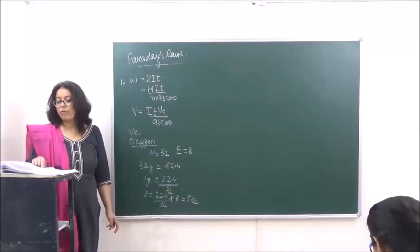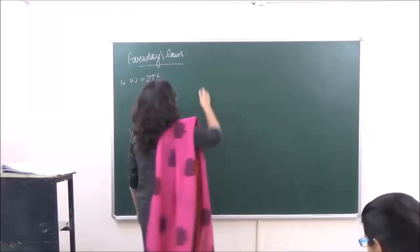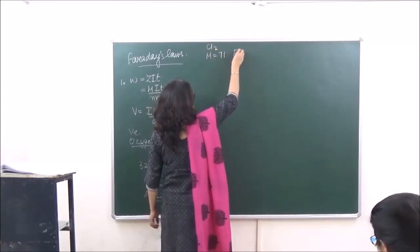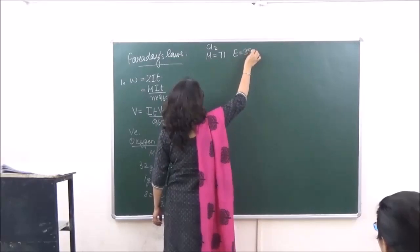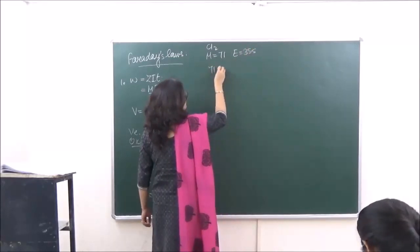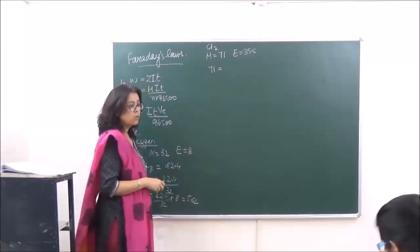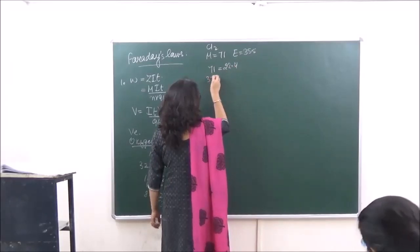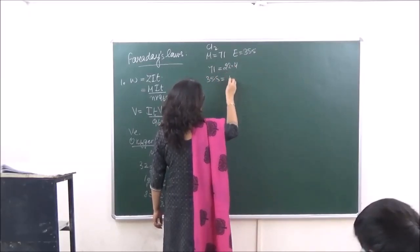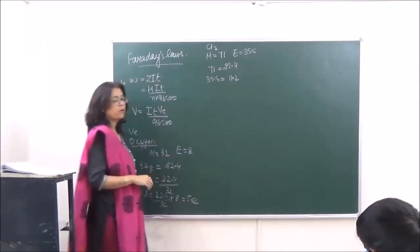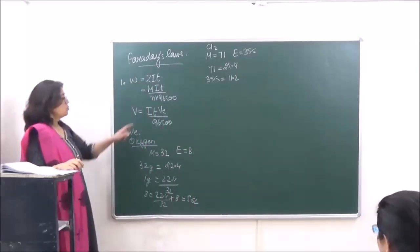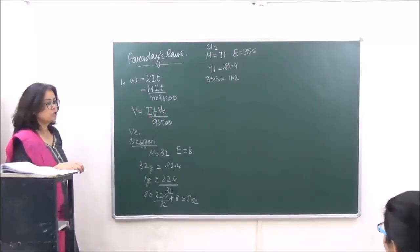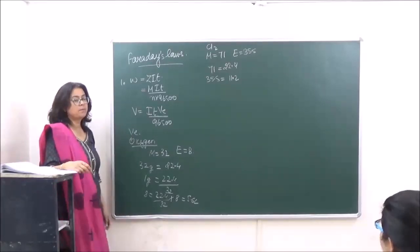Similarly, for chlorine, the molecular weight is 71 and the equivalent weight is 35.5. If 71 grams equals 22.4 liters, then 35.5 grams gives half of that, which is 11.2 liters. So you take the equivalent volume, current, time, and divide by 96500 to get the volume of gas liberated.